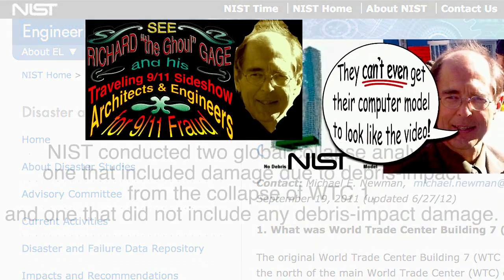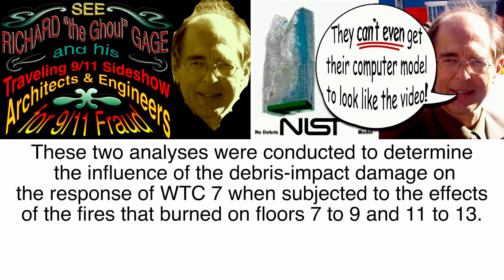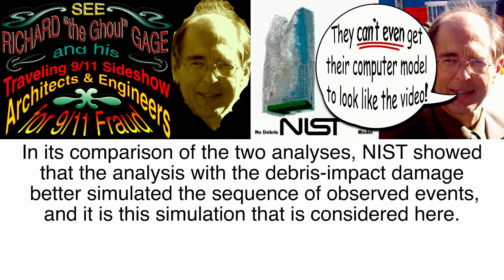The answer to question number 29 is: NIST conducted two global collapse analyses — one that included damage due to debris impact from the collapse of World Trade Center 1, and one that did not include any debris impact damage. These two analyses were conducted to determine the influence of the debris impact damage on the response of World Trade Center 7 when subjected to the effects of fires that burned on floors 7 to 9 and 11 to 13. NIST showed that the analysis with the debris impact damage better simulated the sequence of observed events, and it is this simulation that is considered.